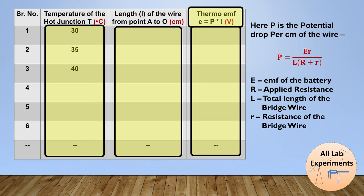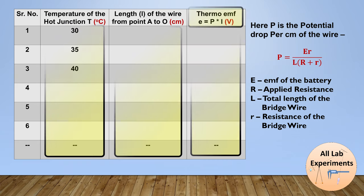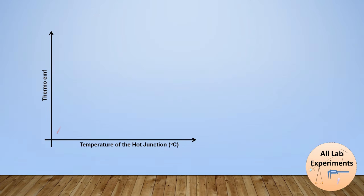So in this way we will prepare this table, and finally we will plot a curve between the temperature of the hot junction and the thermo EMF. Generally in some lab experiments it is hard to increase temperature after a certain limit.